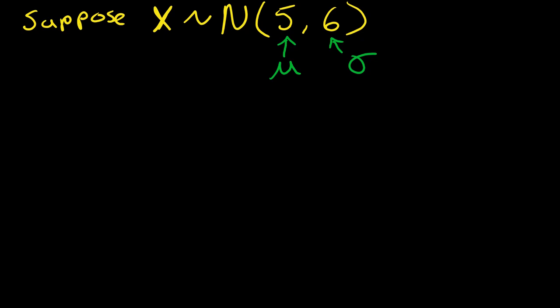Next in this example, they say suppose little x equals 17. What is little x? Little x is just one observation from the possible values that this random variable can take. The random variable is normally distributed and can take any values.